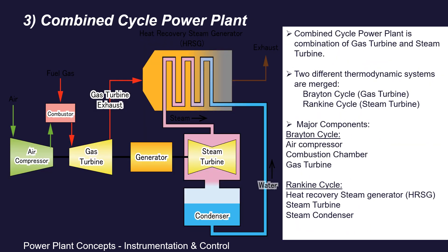Next is the combined cycle power plant (CCPP). We have already discussed the simple open cycle gas power plant based on the Brayton cycle, where exhaust gas carries a lot of unused energy into the atmosphere. In a combined cycle power plant, this unused heat energy is used to produce steam and rotate steam turbine blades, thus producing additional electricity. A combined cycle power plant consists of two thermodynamic systems: one for the gas turbine operation (Brayton cycle) and one for the steam turbine operation (Rankine cycle). On the gas turbine side: air compressor, fuel gas combustion chamber, and gas turbine. On the steam turbine side: heat recovery steam generator (HRSG), steam turbine, and condenser.